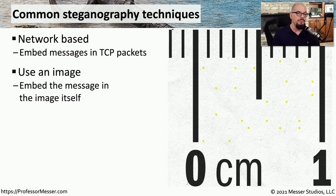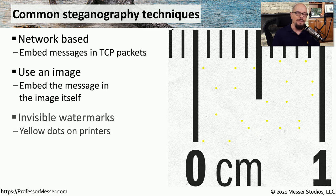You can also use an image to transfer this information. The larger the image, the more information you're able to transfer. If you examine the output from a laser printer, you'll notice there are watermarks on every single page that provide information about the laser printer and where it may be located.